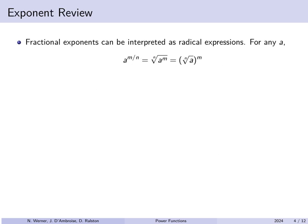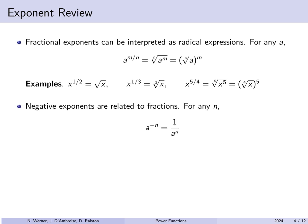A fractional exponent can be interpreted as a radical. For example, a^(m/n) can be written as the nth root of a^m. So x^(1/2) is simply the square root of x, x^(1/3) is the cube root of x, and x^(5/4) is the fourth root of x to the fifth.